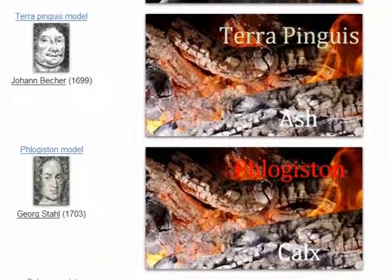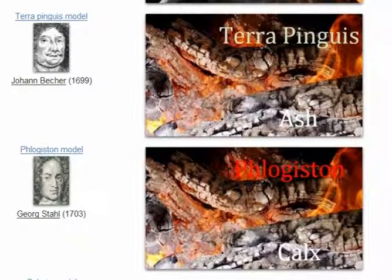In 1703, a student of Boettcher named George Stahl modified his mentor's theory by substituting the oily substance by the name phlogiston, which he called the principle of fire, and added to Boettcher's theory that when metal burned, or wood burned, or anything burned, phlogiston would leave, leaving behind the calx.